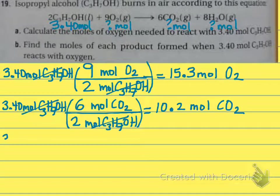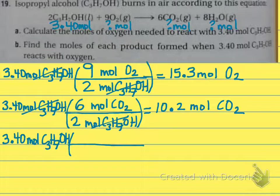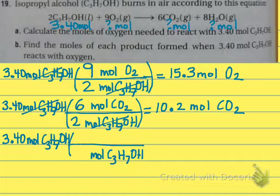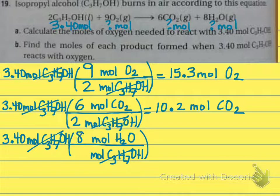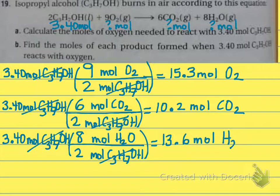And then for water, very similar. We're going to start again with our 3.40 moles — we always want to start with what we're given in the problem in case we make a calculation error. Our moles of alcohol go on the bottom so that they will cross out, and this time we'll have moles of water on the top. Our coefficient on water is 8, and on our alcohol it's 2. So 3.4 times 8 divided by 2. With 3 significant figures, we get 13.6 moles of water.